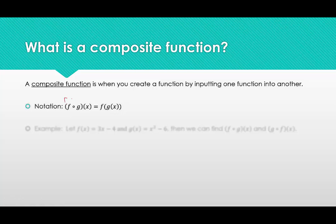The way we pronounce this is 'f of g of x,' and that's literally what it is. We would start with the innermost thing first — we look at g of x first, and whatever result we get from g of x, we then plug into the function f. We always start with the one that's in the middle, or to the right in the parentheses.